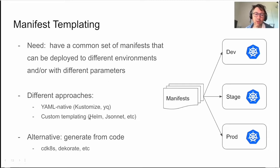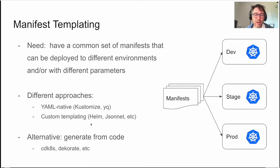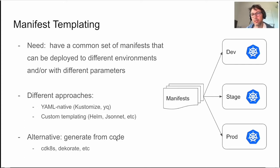I'm going to look at two approaches: Kustomize, which uses a YAML-native approach, and Helm, which is not YAML-native but nonetheless popular and great. There are other alternatives — CDKs or Cdk8s — where you can generate manifests from code. If you prefer writing code over YAML, there are great tools for that approach. It's worth exploring depending on how you want to work.